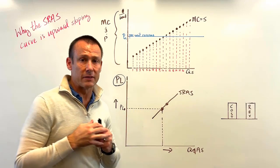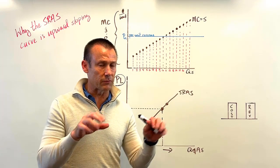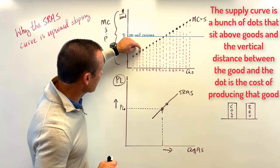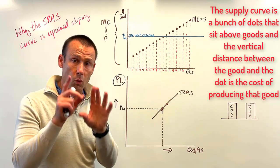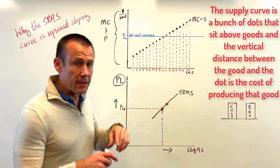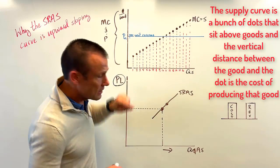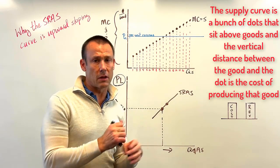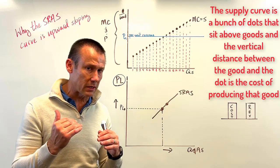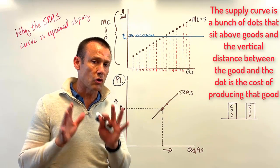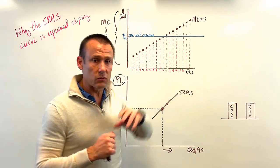Before explaining why, let's talk about the supply of a single product. A supply curve is actually a bunch of dots — one dot per good. Every dot lies above a good, and the vertical distance between the good and the dot is the marginal cost of supplying that good. Supply curves are actually marginal cost curves — that's so important to understand.